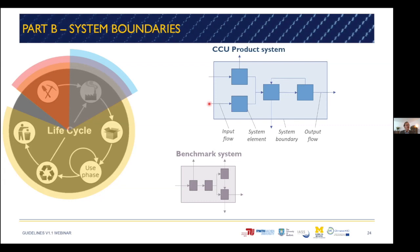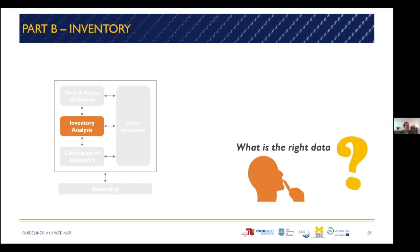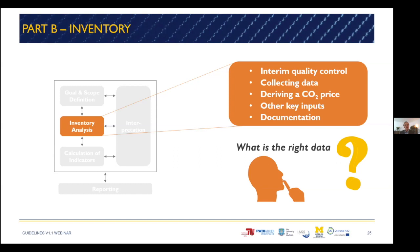If we draw a product system diagram and one for the benchmark system, we can compare them and ask: what is included, what is excluded, and is this a fair comparison? Once we have defined our goal and scope, we can move on to creating and analyzing our inventory — our data. Inventory analysis is about collecting, checking, and documenting the right data. The guidelines include sections on interim data quality control, collecting data, deriving CO2 price, deriving prices for other inputs, and documentation. Building an inventory follows a five-step approach: define and check quality requirements; identify which processes, system elements and sub-processes are in the assessment; collect technical data; collect economic data; and document this data.